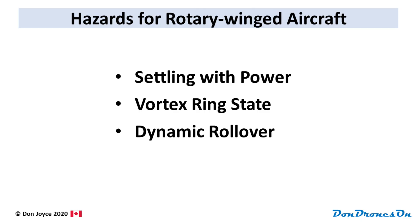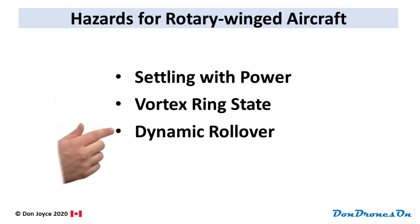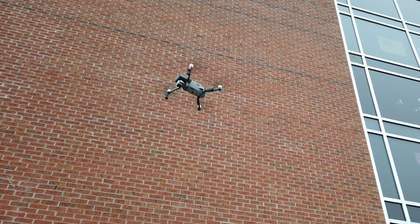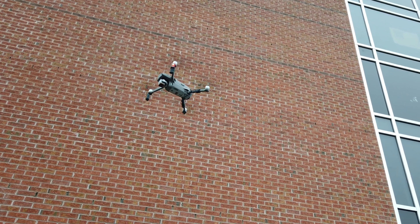Before I finish off, I want to talk about three hazards of flying with rotating airfoils, aside from the obvious risk of losing body parts. The three risks are: settling with power, vortex ring state, and dynamic rollover. And all of these can happen with drones, just like helicopters.